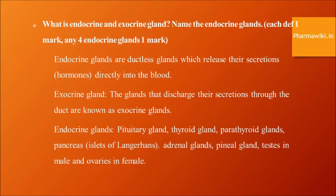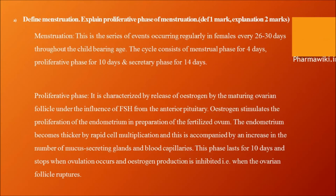Define menstruation and explain the proliferative phase. Menstruation is the series of events occurring regularly in females every 26 to 30 days throughout the childbearing age. The cycle consists of the menstrual phase for four days, proliferative phase for 10 days, and secretory phase for 14 days. The proliferative phase is characterized by release of estrogen by the maturing ovarian follicle under the influence of FSH from the anterior pituitary.